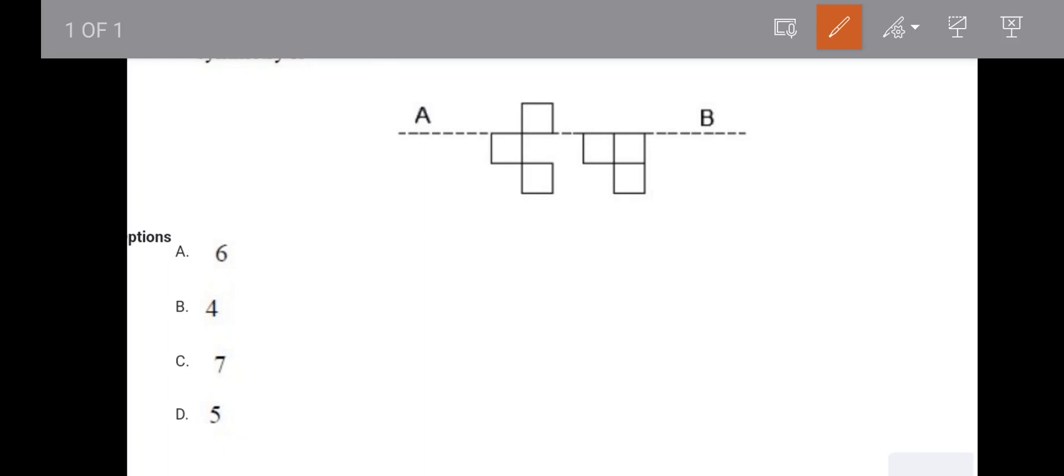This was also another easy question - to make the diagram symmetric about the dotted line between A and B. For this square we will make one square here, so 1. And to make this square symmetrical we will make one here, so 2 squares. And for this one we will make one more square here, so 3 squares.